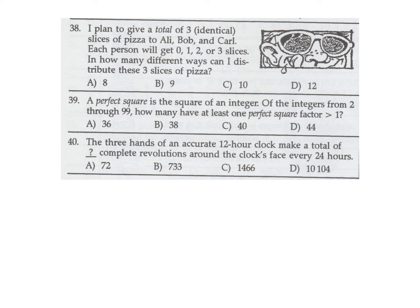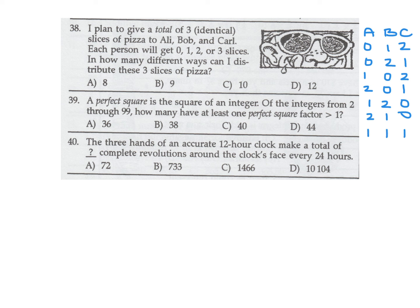I plan to give a total of 3 identical slices of pizza to Ali, Bob, and Carl — each gets 0, 1, 2, or 3 slices. How many ways? Listing combinations that sum to 3: (0,1,2), (0,2,1), (1,0,2), (1,2,0), (2,0,1), (2,1,0), (1,1,1), (3,0,0), (0,3,0), (0,0,3). That's 10 ways. Number 38, answer is C.